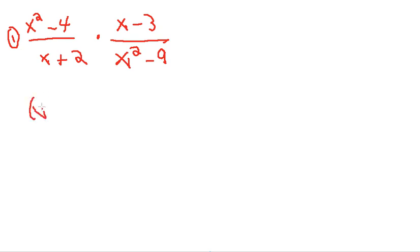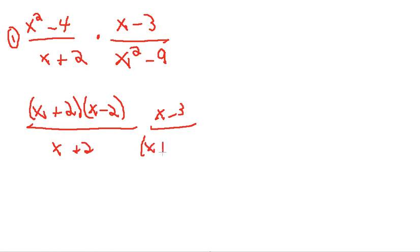Now, x squared minus 4 is really x plus 2, x minus 2, over, that's x plus 2. Here, that's just x minus 3. In fact, the denominator, x plus 3, x minus 3. That's step 1.